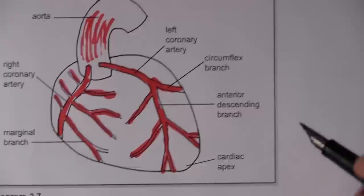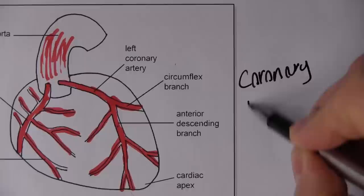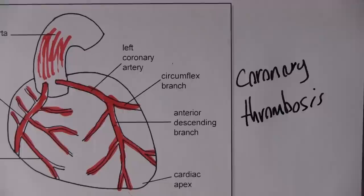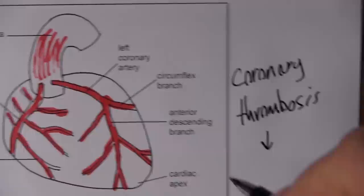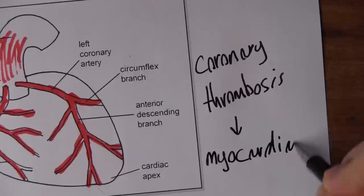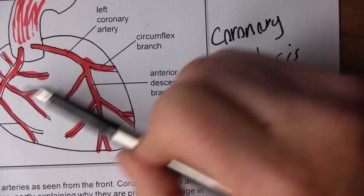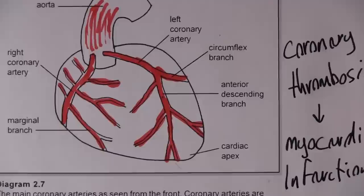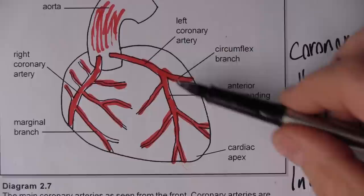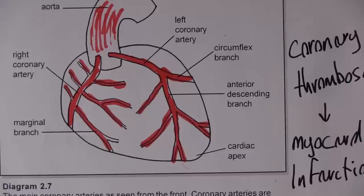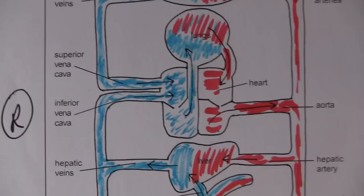What we don't want is a blockage in these coronary arteries, because that causes a heart attack. A blockage is called a coronary thrombosis — a thrombosis is a blood clot where we don't want one — and that leads to a myocardial infarction. So don't smoke, do get plenty of exercise, eat lots of fruit and vegetables, avoid trans fats, manage diabetes if you have it, maintain a healthy weight, and don't drink too much alcohol.